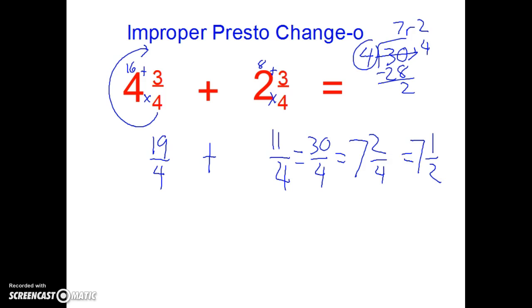That's the improper presto change-o. Change them to improper fractions, add them, then change them back to a mixed number. I know it seems like a lot of work, but it's going to work every day even when our denominators are not the same.